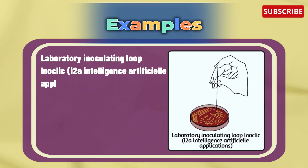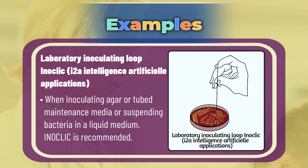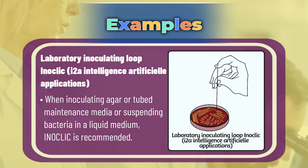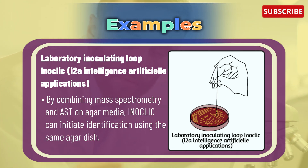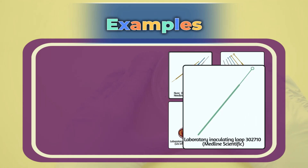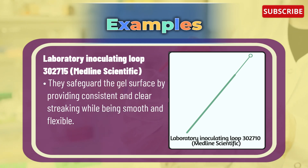Next is the laboratory inoculating loop Inoclic (i2a — intelligence artificielle applications). When inoculating agar or tube maintenance media, or suspending bacteria in a liquid media, Inoclic is recommended. By combining mass spectrometry and AST on agar media, Inoclic can initiate identification using the same agar dish. The last example is the laboratory inoculating loop 302715 (Medline Scientific): they safeguard the gel's surface by providing consistent and clean streaking while being smooth and flexible. They arrive in convenient batch and expiry date-marked, clean peel-pouch packets.